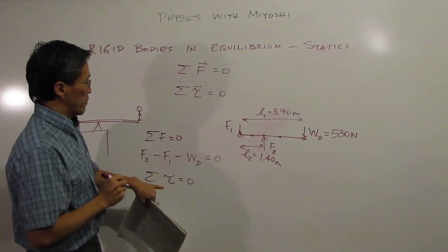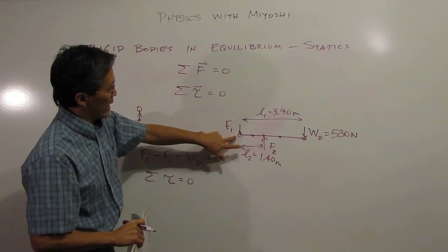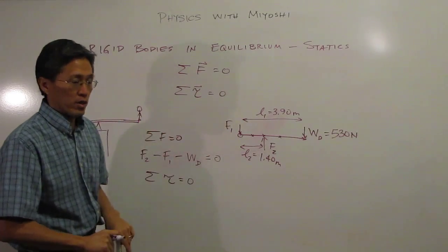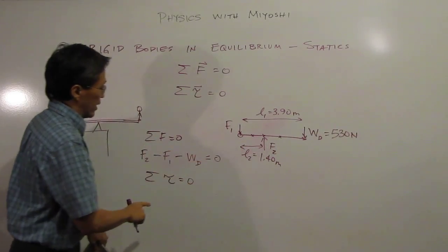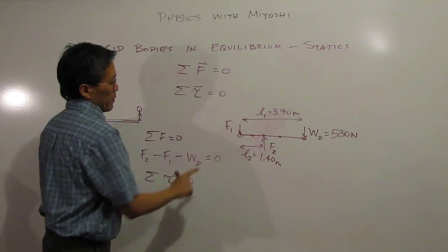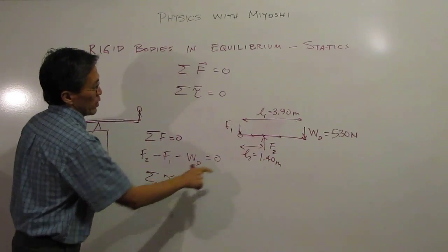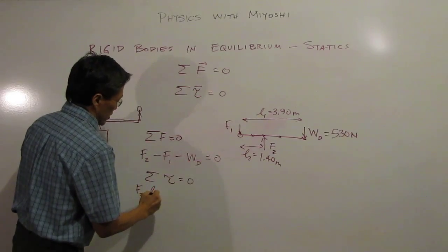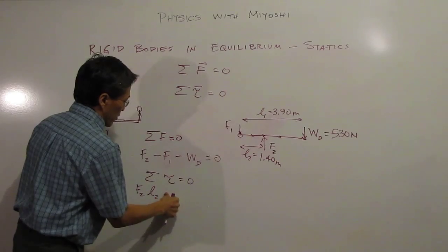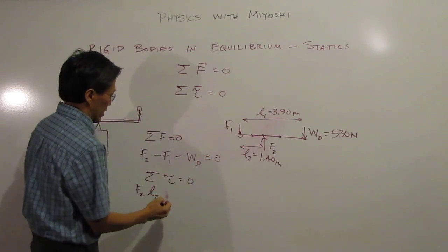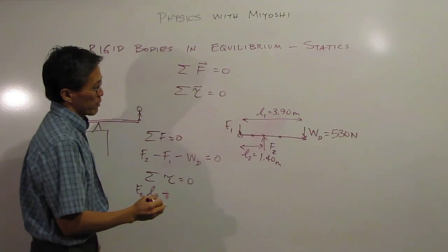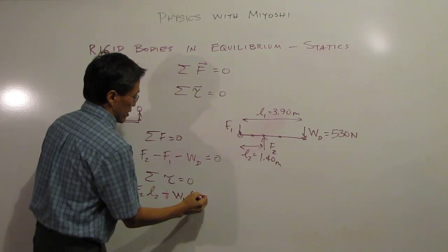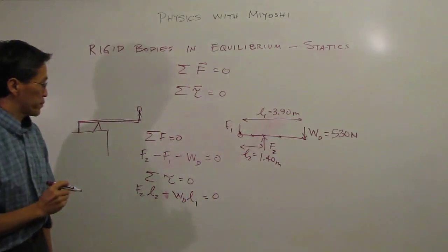And then we'll sum up our torques. So since this force is acting right at the fulcrum point, or the rotation point, then that's got to be zero. So that torque there is going to be zero. I'll do this guy here. That's force two. Since it's going up, that's going to create a positive torque. So that would be F2 times L2. And then since this one's coming down, it's going to have a negative torque, minus WD times L2, or L1 rather. And that's going to be zero.